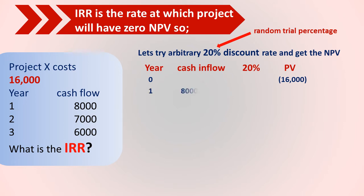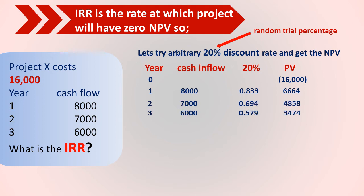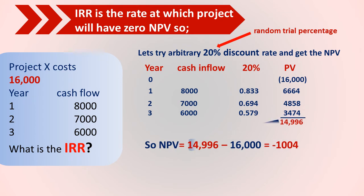For year one, the cash inflow is $8,000 and the present value factor is 0.833. You can get this from the present value factor table, or calculate it using the NPV formula. The present value for year one is $6,664. Doing that all the way to year three, the total present value is $14,996. So the NPV is $14,996 minus $16,000, which equals negative $1,004.